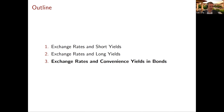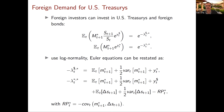Now let me conclude by thinking about exchange rates and convenience yields — the third major force in exchange rate determination. Going back to the earlier equations: that first Euler equation is for a foreign investor thinking about going long in U.S. Treasuries. But now let's assume this investor gets a convenience yield lambda-dollar-star from a long position in Treasuries — and we're going to think that lambda-dollar-star is pretty big, because that German or Italian investor has particular safe asset demand for dollar-denominated safe assets.